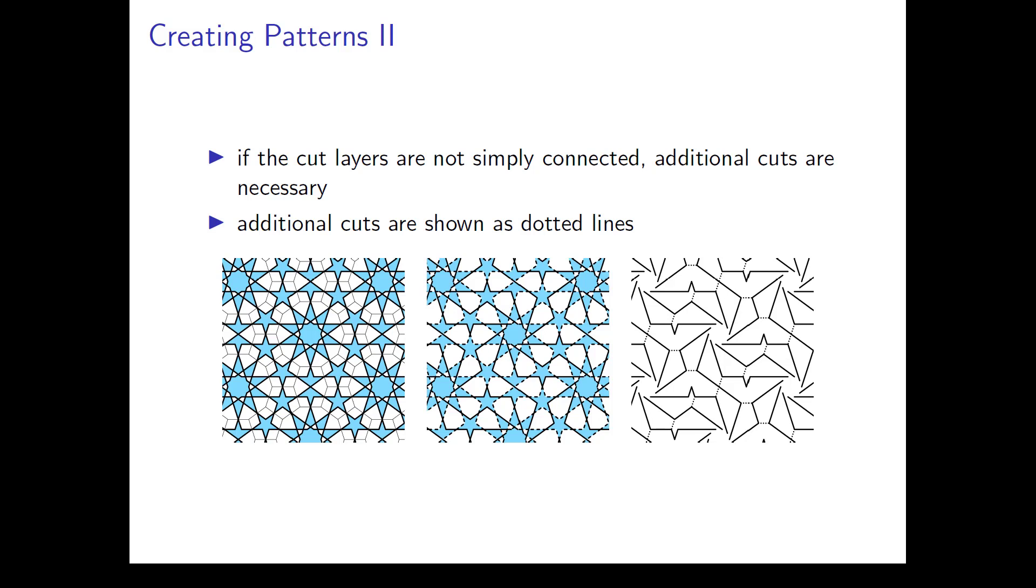The dotted cut lines are chosen all inside faces of one color, so in the end, the cuts are hidden at the back side of the weaving.